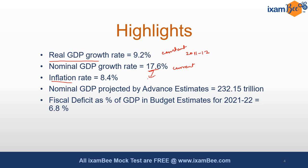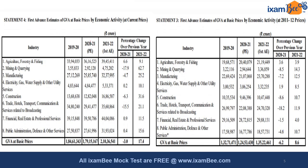Now let's look at the estimates that were released in some detail. The government has released these estimates — gross value added at basic prices — for current prices as well as for the base year prices, which is 2011-12 prices. The gross value added among the eight sectors of the economy — agriculture, forestry and fishing; mining and quarrying; manufacturing; electricity, gas, water supply and other utility services; construction; trade, hotels, transport, communication and services related to broadcasting; financial, real estate and professional services; and public administration, defense and other services — are added to arrive at the GVA at basic prices for the whole economy.